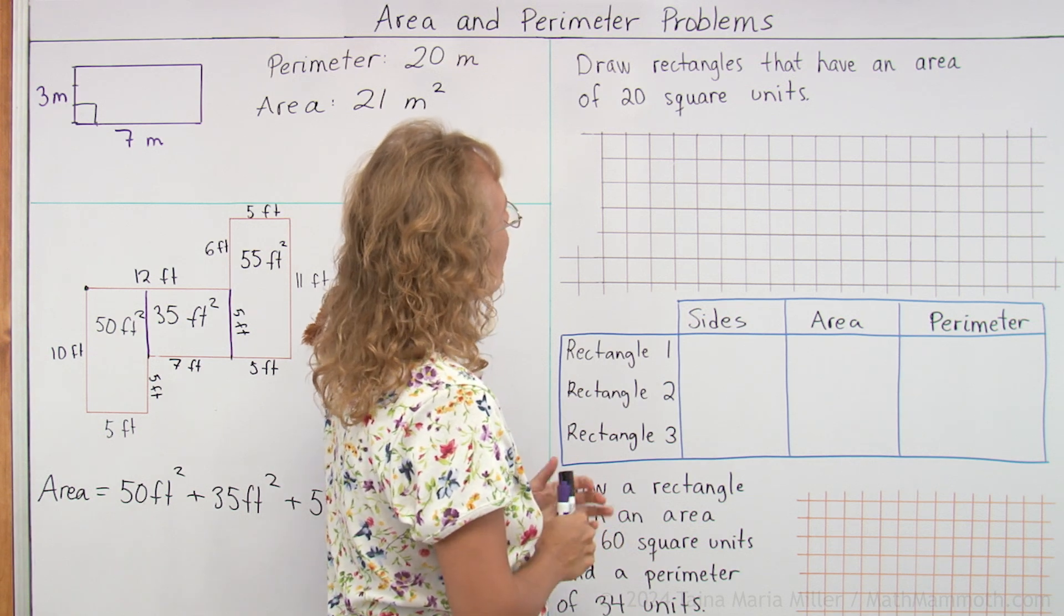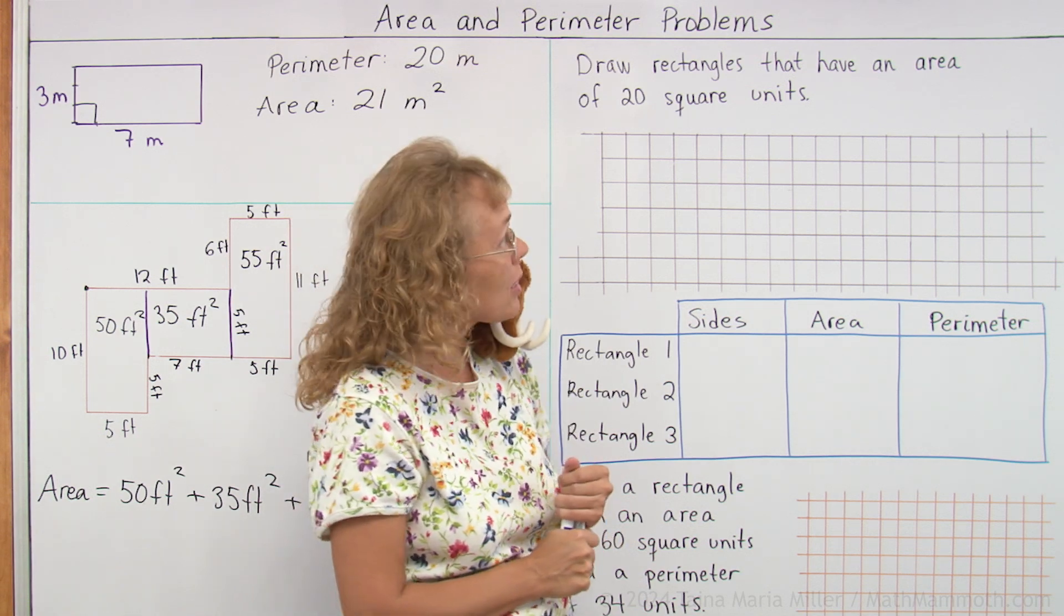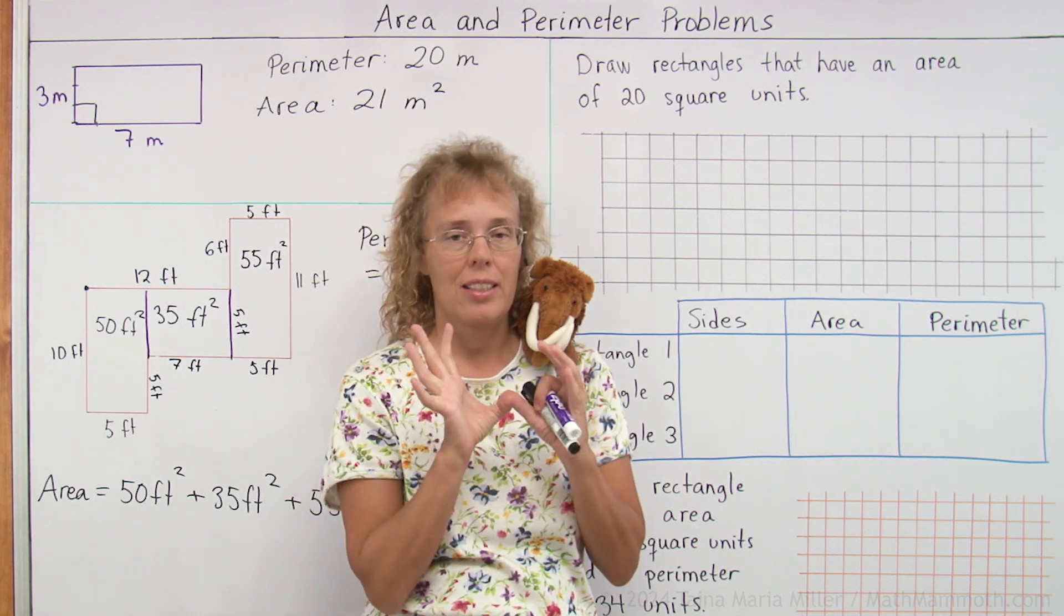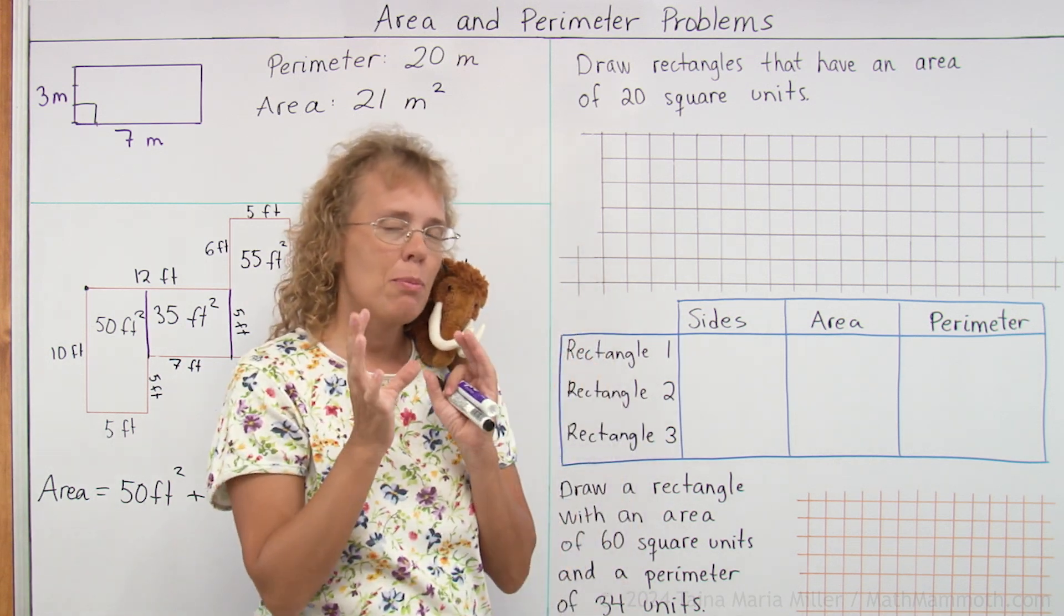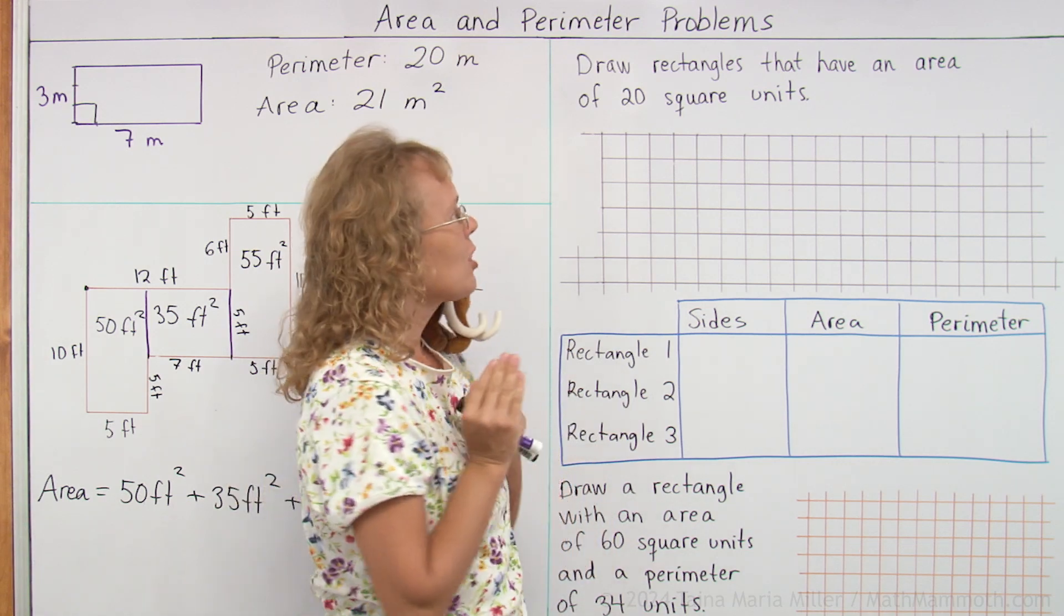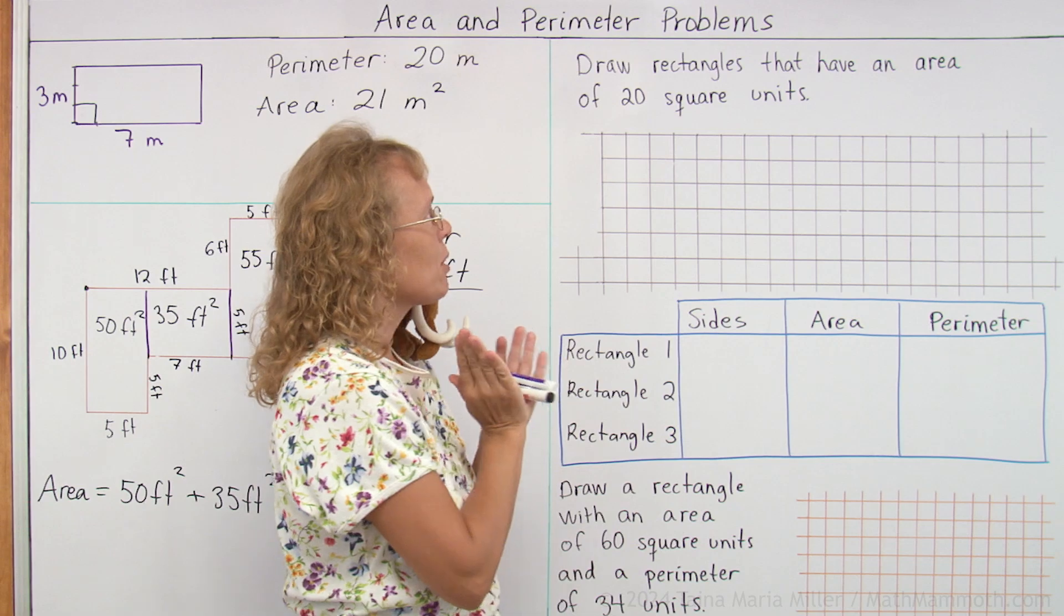Draw rectangles that have an area of 20 square units. Okay, the area has to be 20. We get area by multiplying the side lengths, so we multiply the side lengths and we should get 20.